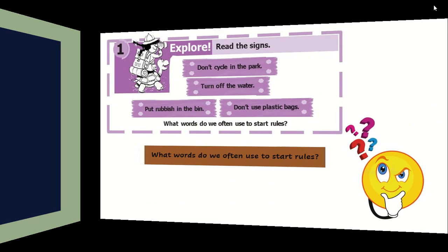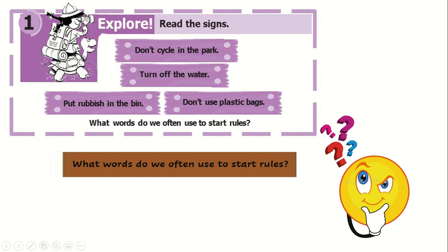I want you to open your book. On your skills book, page number 42, we are going to explore the language. Read the signs: don't cycle in the park, turn off the water, put rubbish in the bin, don't use plastic bags. Look at these instructions — what do you notice? What word do we often use to start rules or instructions when giving them to somebody?